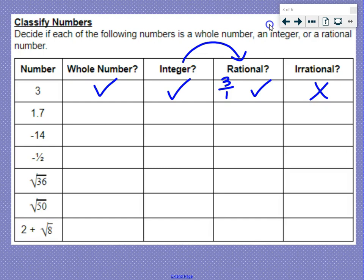1.7. That's a decimal, which means it's not a whole number and it's not an integer. But is it rational? Yes, because it ends. It's an ending decimal. So yes, rational. If it's rational, that means it's not irrational.